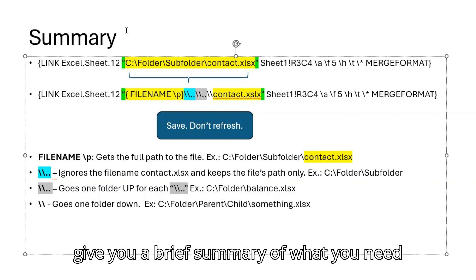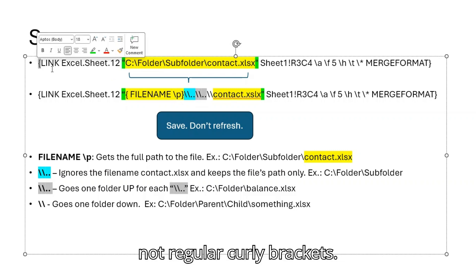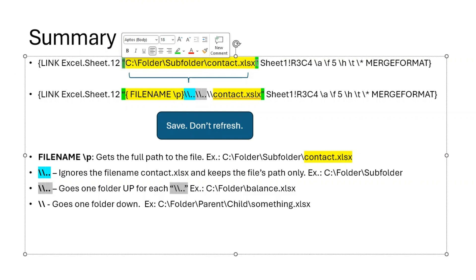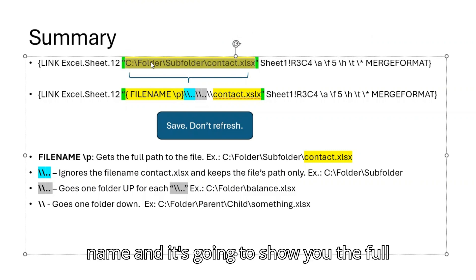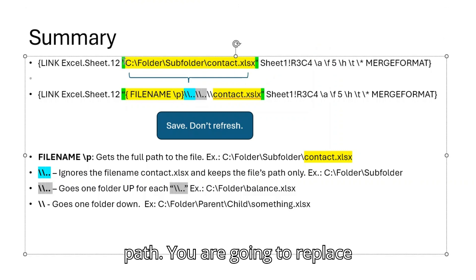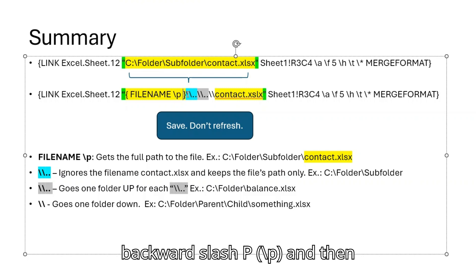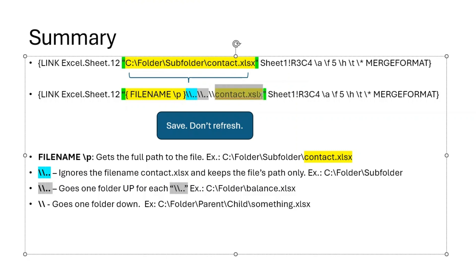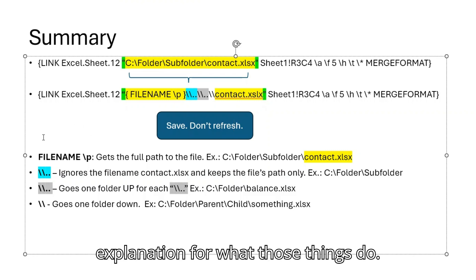For the sake of time I'm going to give you a brief summary of what you need to do. This is a field code — remember these are not regular curly brackets, watch my first video if you want more information. Between the quotation marks, after you refresh, the field will show you the full path. You are going to replace everything between the quotation marks with another field code: file name backward slash P, then point to the correct folder where contact.xlsx is located. Then you save and you don't refresh.